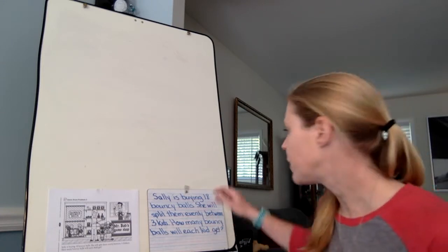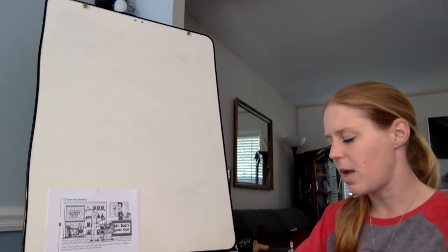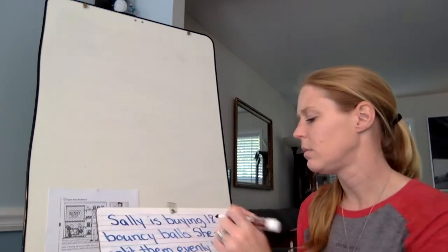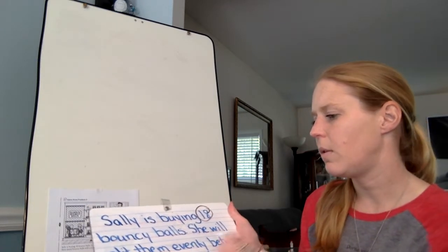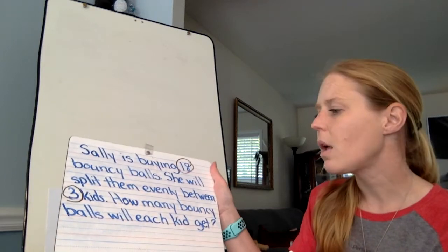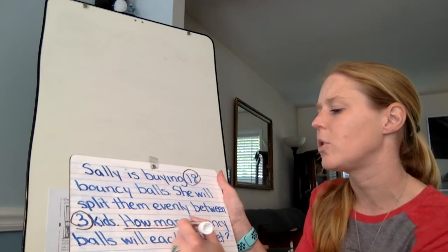So let's CUBE. Circle first. So circle your numbers. In this case, Sally is buying 18 bouncy balls. I'm going to circle that 18. And we know she's splitting them evenly between three kids. How many bouncy balls will each kid get is what I want to underline because that's the question I'm looking to answer.